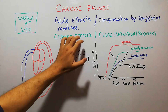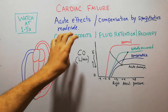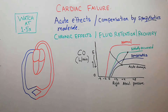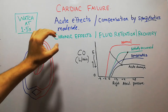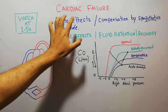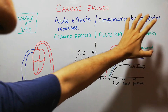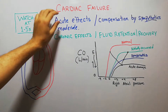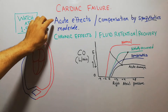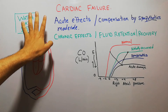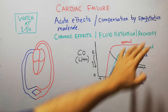Today we are going to talk about the chronic effects of cardiac failure, which is basically characterized by fluid retention and recovery of the heart. In the previous lecture we discussed the acute effects of cardiac failure and the main compensation by the sympathetic system in moderate cardiac failure. Now we are going to summarize the acute effects and then move to the chronic effects, which include fluid retention and recovery of the heart.